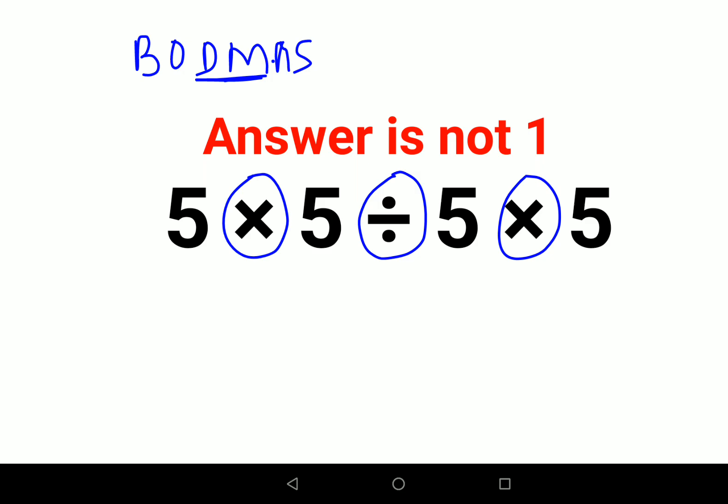So whenever your question has just division and multiplication, in that case what you will do is you will go from left to right. Means you will first do the operation which happens on your left end first. So which will be what?